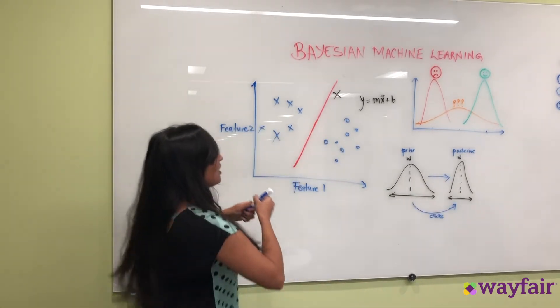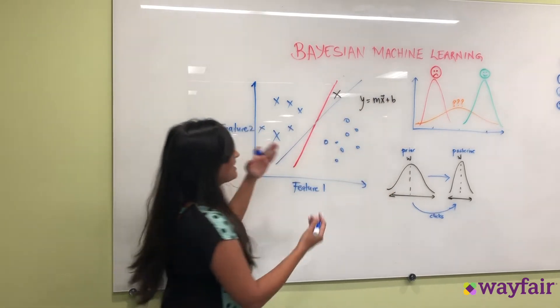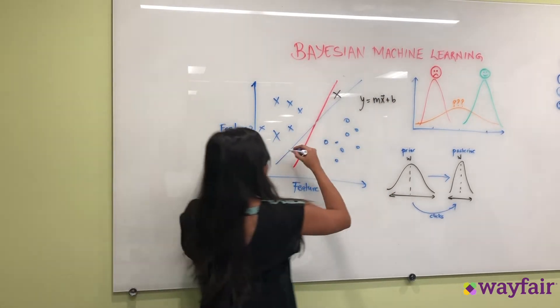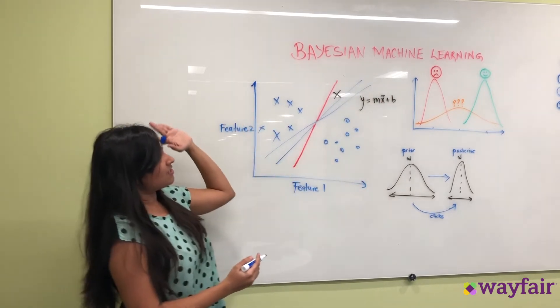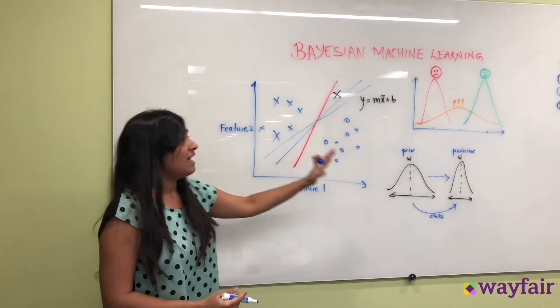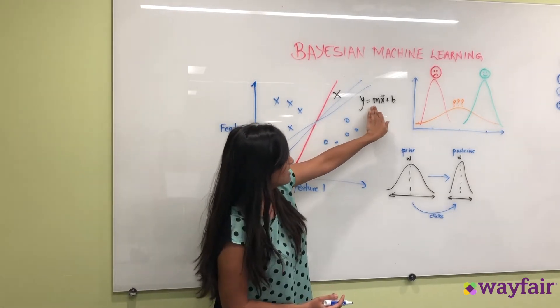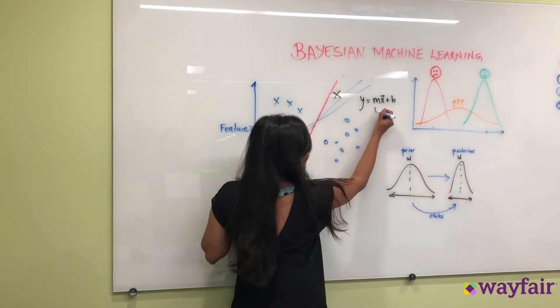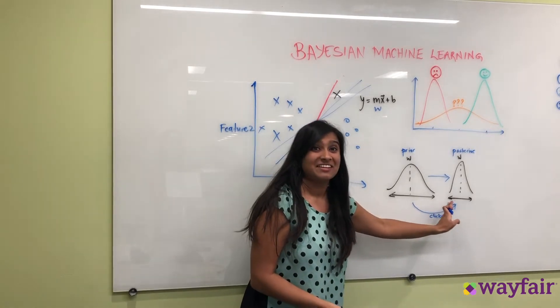Well in a Bayesian framework this line is an equally valid line and this line is an equally valid line. So we consider this whole family of lines based on this data that we show. And then what we essentially try to do is that instead of predicting a single slope or a single weight, we try to estimate a distribution over weights.